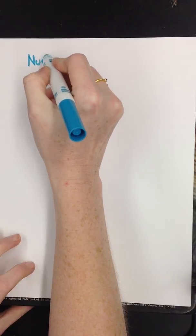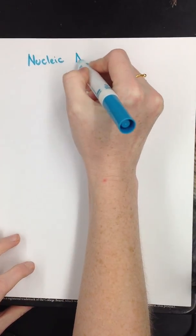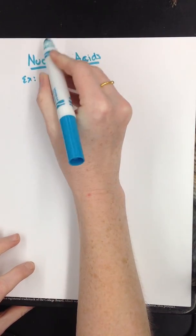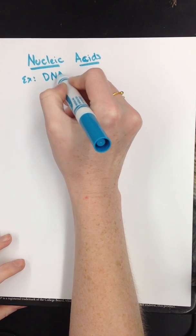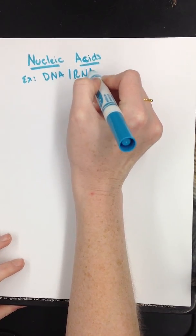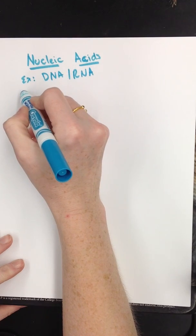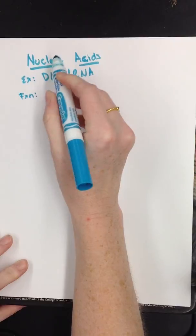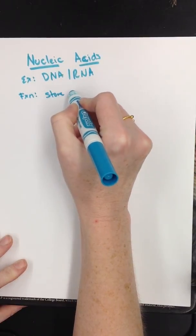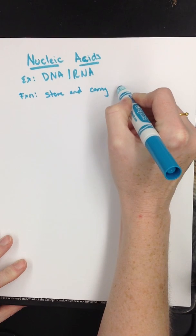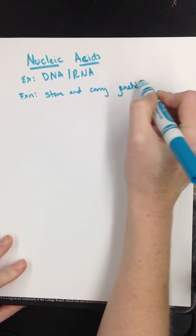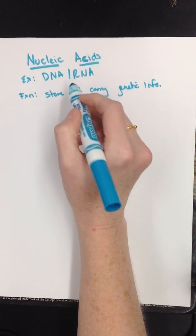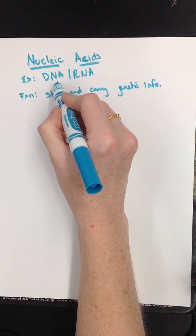First thing we need to do is revisit everything we know about nucleic acids. So first things first, my two examples of nucleic acids are DNA and RNA. Next thing, let's go ahead and do function.